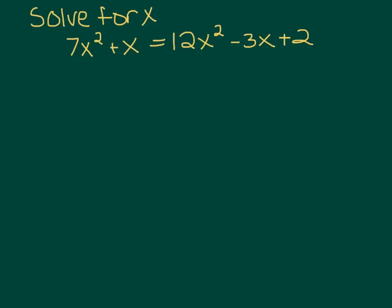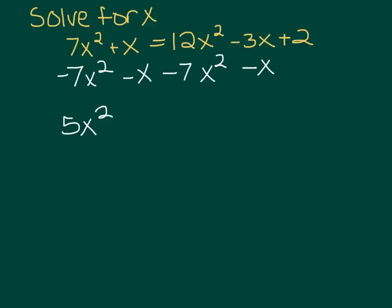Let's try one. Here's a quadratic — it says solve for x. The first thing you always have to do when solving a quadratic is set it equal to zero, so I need to combine like terms. We'll take away 7x² from both sides and take away x from both sides. I've got 12 minus 7 is 5x², minus 4x, plus 2 equals 0. So a is 5, b is negative 4, and c is 2, and I'm just going to plug these into the quadratic formula.